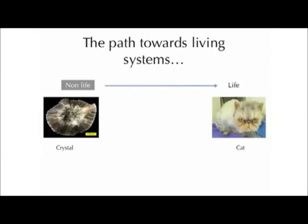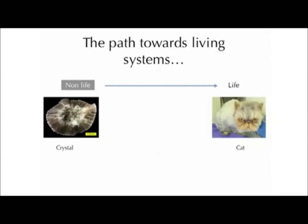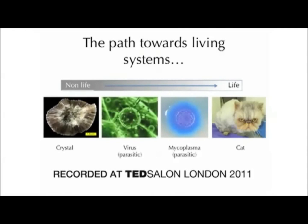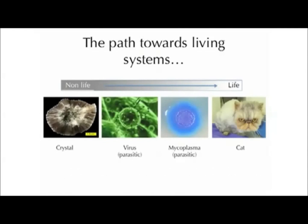Historically there's been a huge divide between what people consider to be non-living systems on one side and living systems on the other side — say, a beautiful and complex crystal as non-life, and a rather beautiful and complex cat on the other side. Over the last 150 years or so, science has kind of blurred this distinction, and now we consider that there may be a kind of continuum that exists between the two.